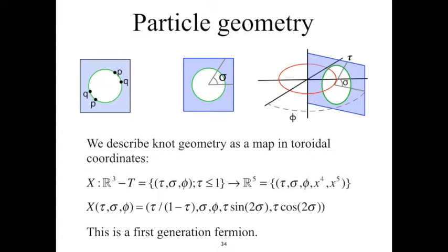We map into R⁵, and the first three coordinates are toroidal: τ, σ, and φ. The last two coordinates are Cartesian, denoted x4 and x5. We make the map x(τ, σ, φ). The first thing we do is take τ over (1−τ). For the set of points where τ ≤ 1, if τ equals 1, this is 1 over 0, which gives infinity. τ equal to infinity means we are located on the central red circle. This map takes all the points on the green circle where τ=1 and pulls them in towards the point on the central red circle. σ and φ are left unchanged, and if the mapping were entirely determined by these first three coordinates, we would have cut a torus out of R³ and then pulled the hole closed again.